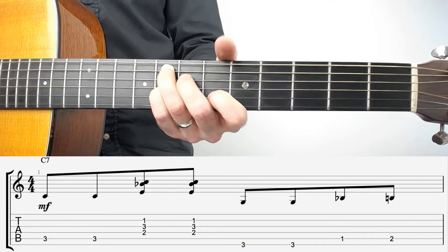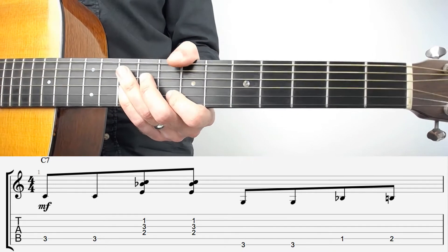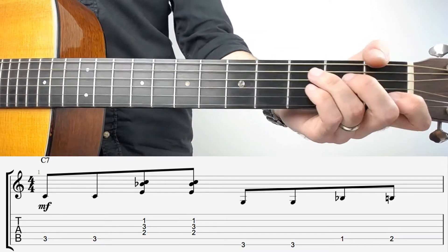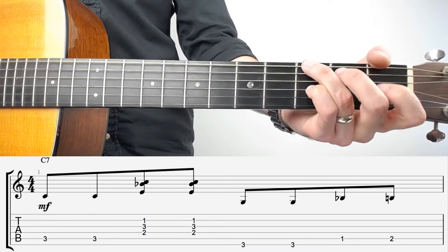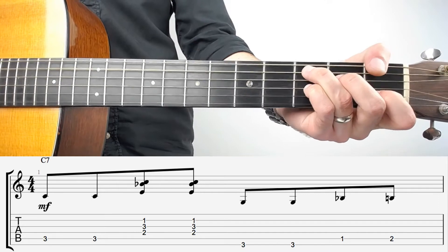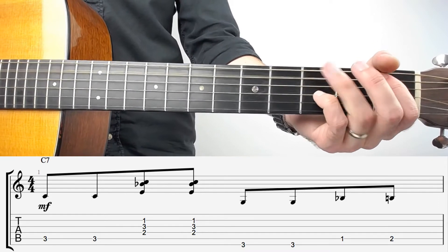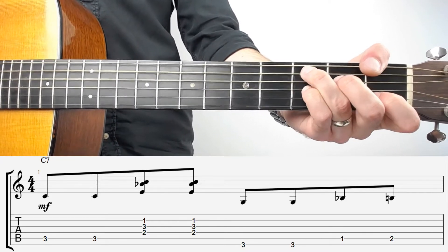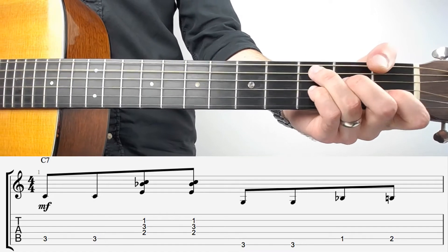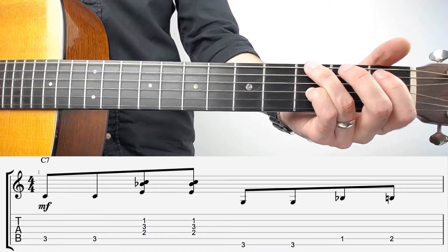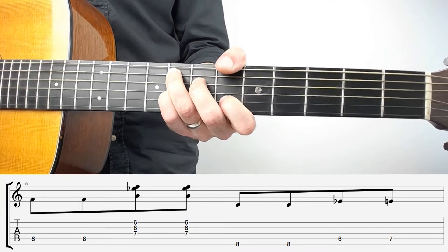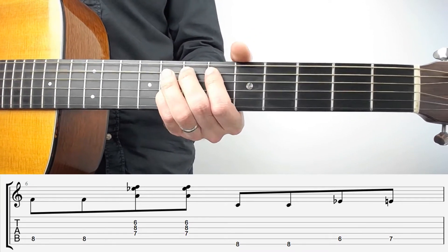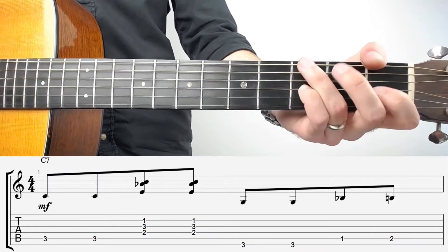Now let's try and put this together. So we start four bars of the first shape of the C. Second, third, fourth, then you go up to F and do that twice, back to the C and twice around.